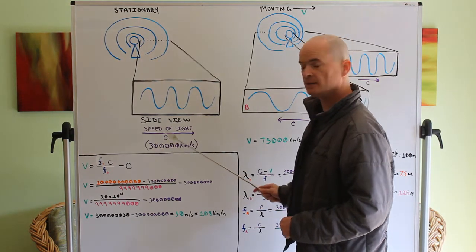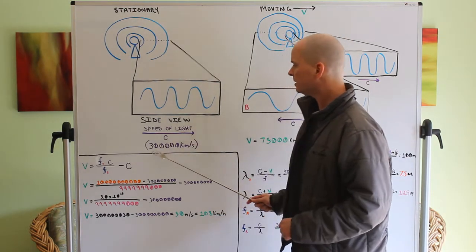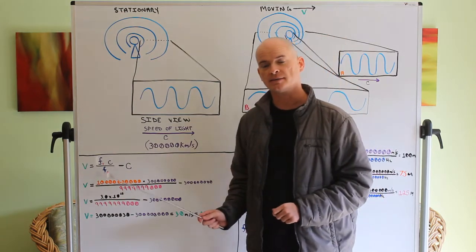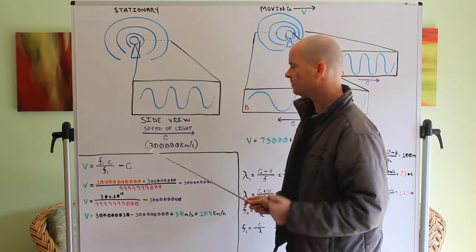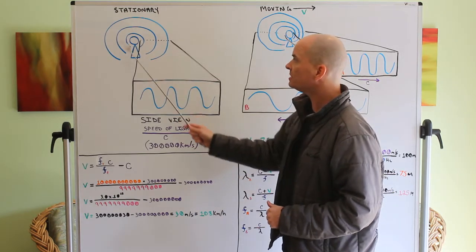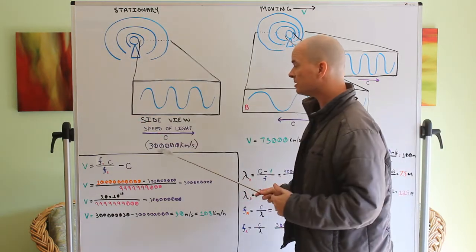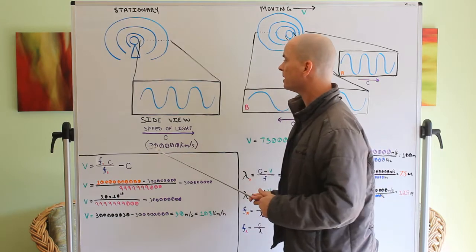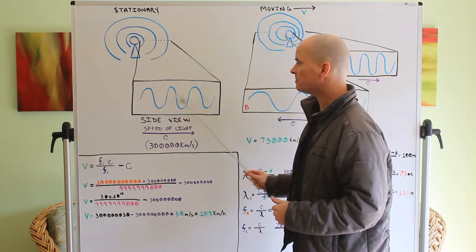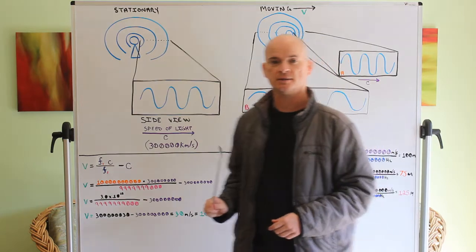One thing we'll make use of throughout this video is the speed of light, otherwise known as little c, which is about 300,000 kilometers per second. These waves are radiating through space and atmosphere at a velocity of 300,000 kilometers per second. For a stationary antenna, the spacing between peaks and troughs is equal all around the antenna.